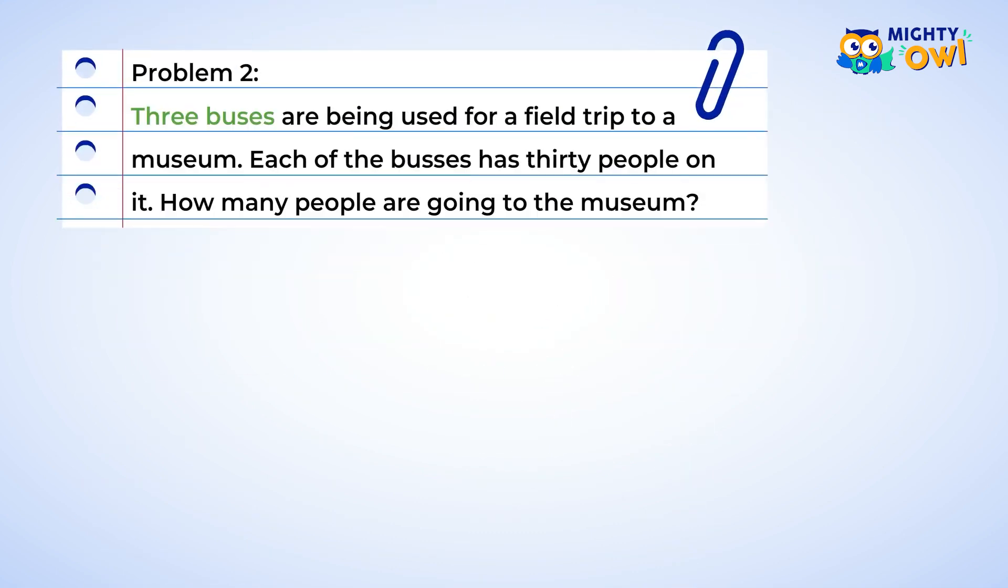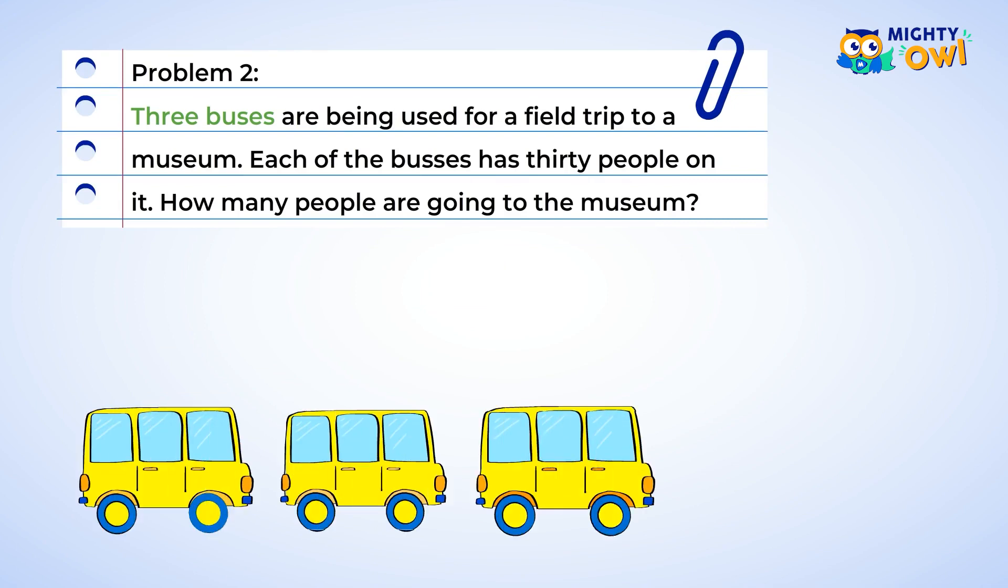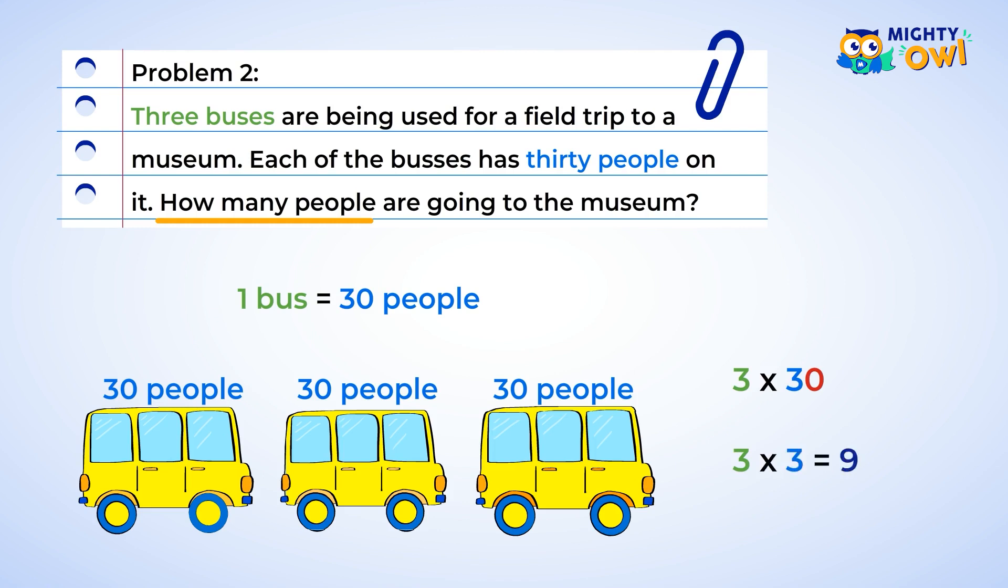Try another one. Three buses are being used for a field trip to a museum. And each of the buses has thirty people on it. So how many people are going to the museum? Well, the buses are the groups, and so you would have three groups of thirty. This isn't a hard problem since you already know a great way to make it easier. Three times thirty is the same as three times three tens. Well, three times three is nine. So three times three tens is nine tens. Nine tens is ninety. That means there are ninety people going to the museum. Great job!